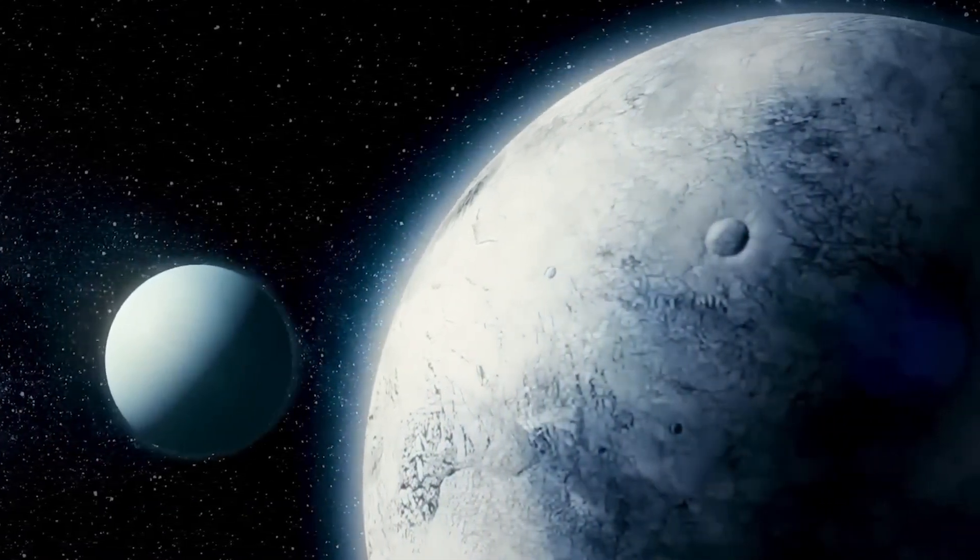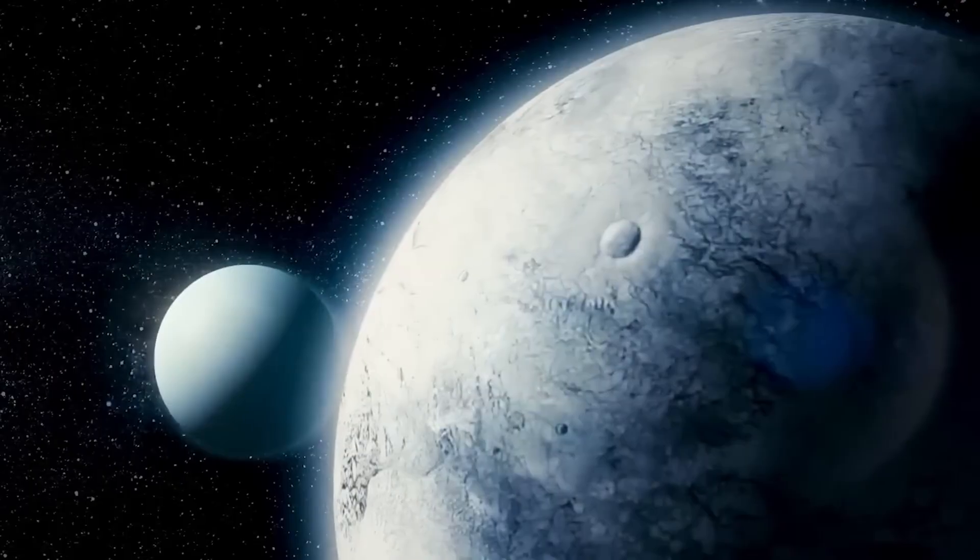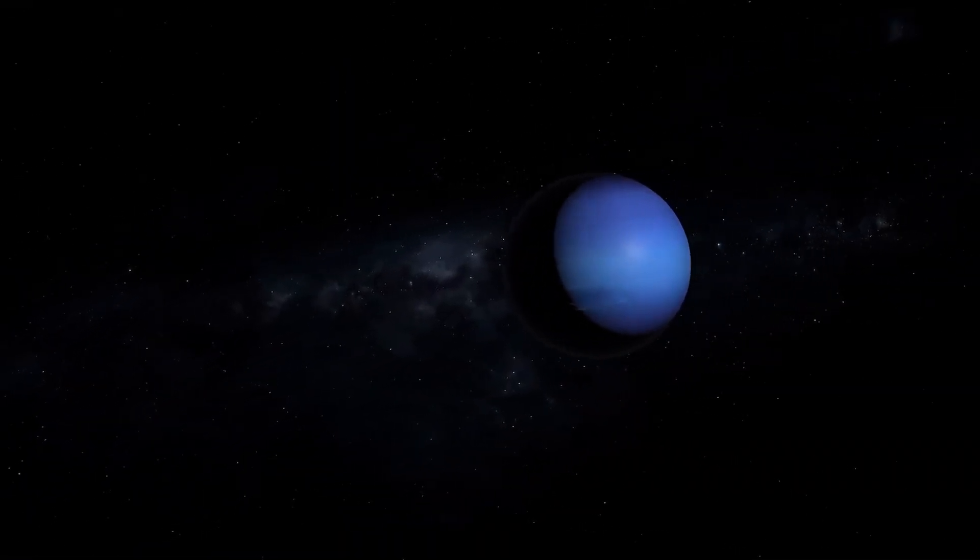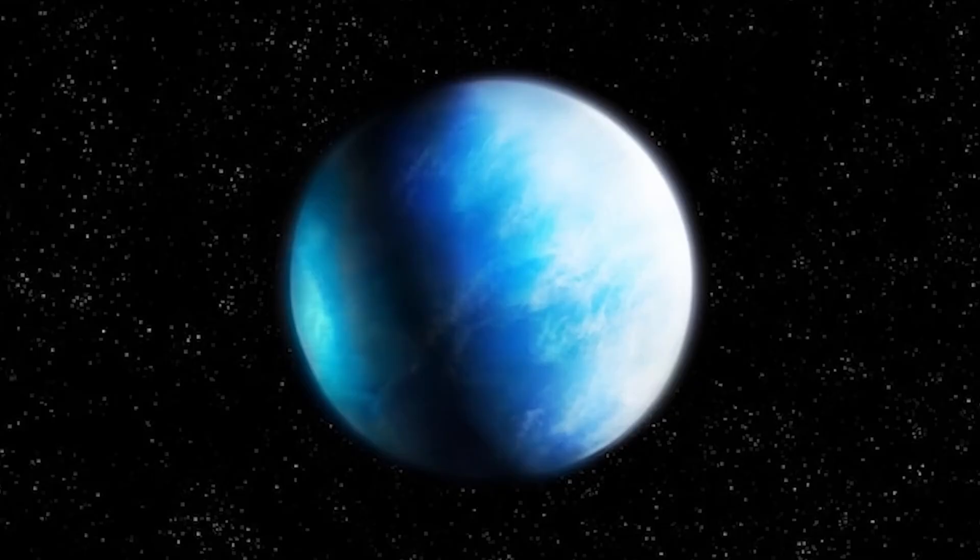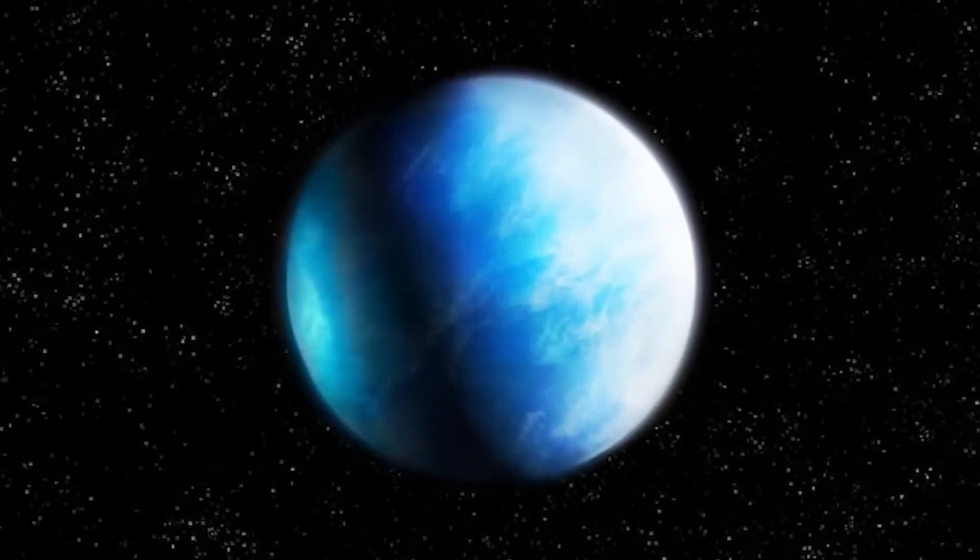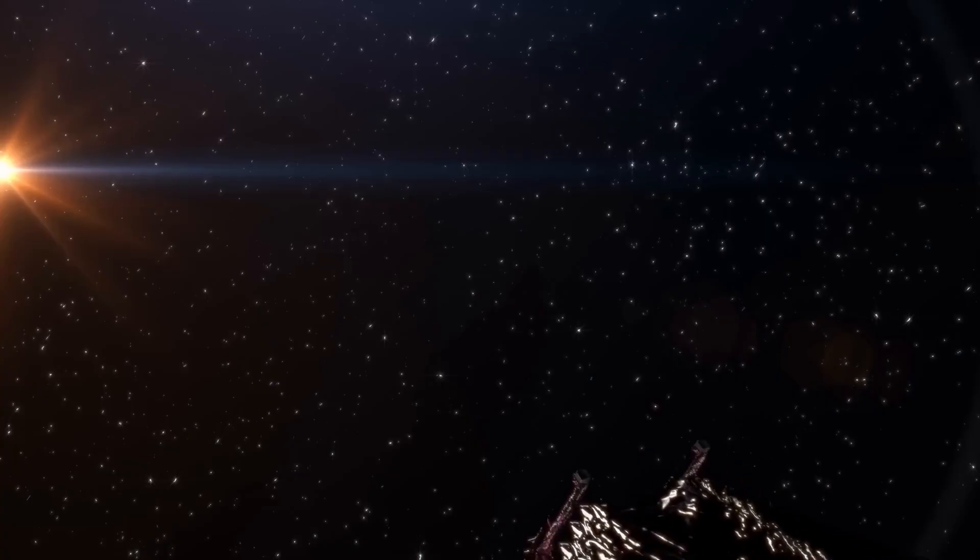This real-time data is a goldmine. For the first time, scientists can test their models against actual observations of how a giant planet's atmosphere responds to a sudden, violent event. It's not just Neptune that benefits. The lessons learned here apply to every gas giant in our solar system, and even to exoplanets orbiting faraway stars.